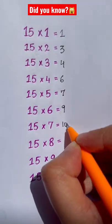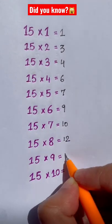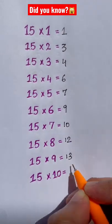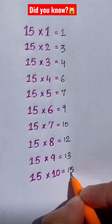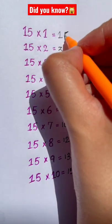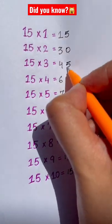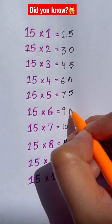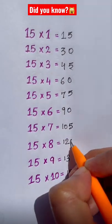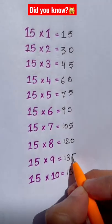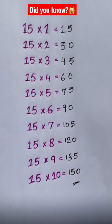Continue the pattern — two odds, two evens: ten and twelve, then thirteen and fifteen as two odds. Now pair these up with alternating fives and zeros: five, zero, five, zero. And that gives you your 15 times table.